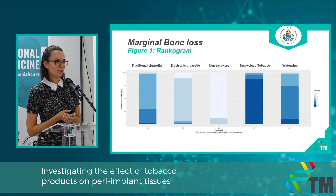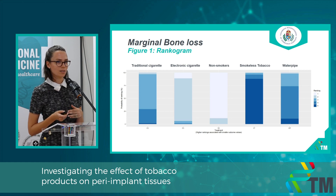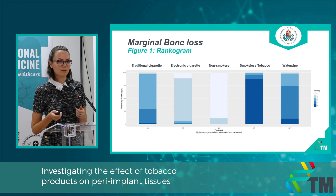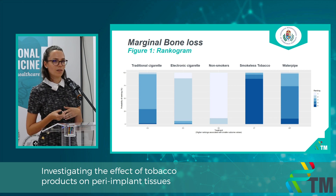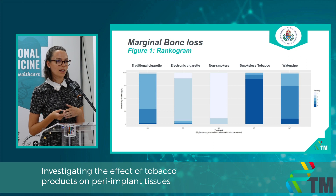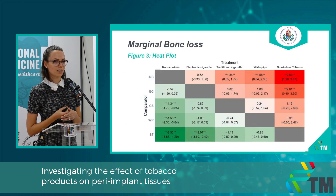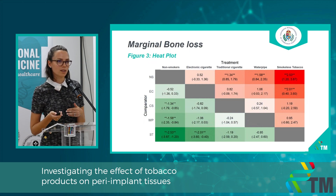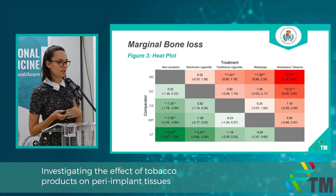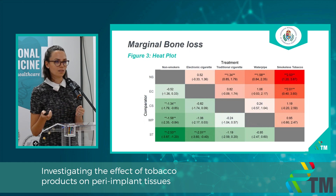Our first figure is the rankogram, which represents the ranking probability of the different tobacco products. Lighter color represents higher ranking. We can see that non-smokers had the smallest marginal bone loss, followed by electronic cigarette users, while water pipe and smokeless tobacco users had the biggest marginal bone loss. The heat plot represents the pairwise comparisons between the different products, and we can see that traditional cigarette smokers, water pipe smokers, and smokeless tobacco users had significantly higher marginal bone loss than non-smokers.